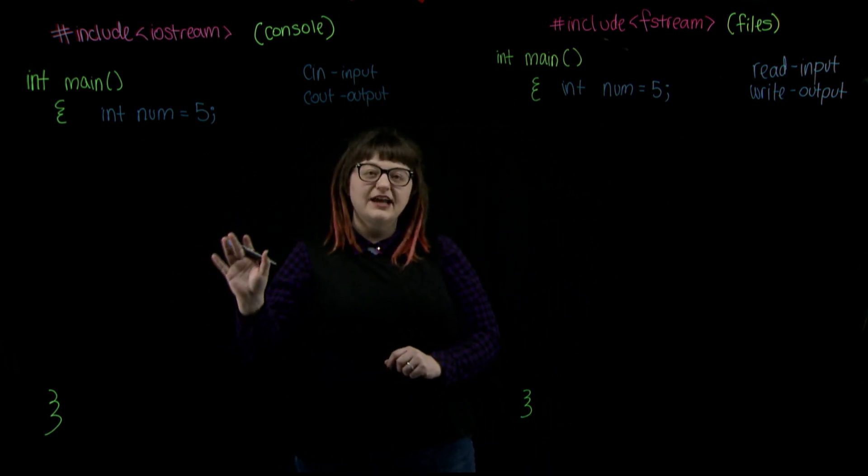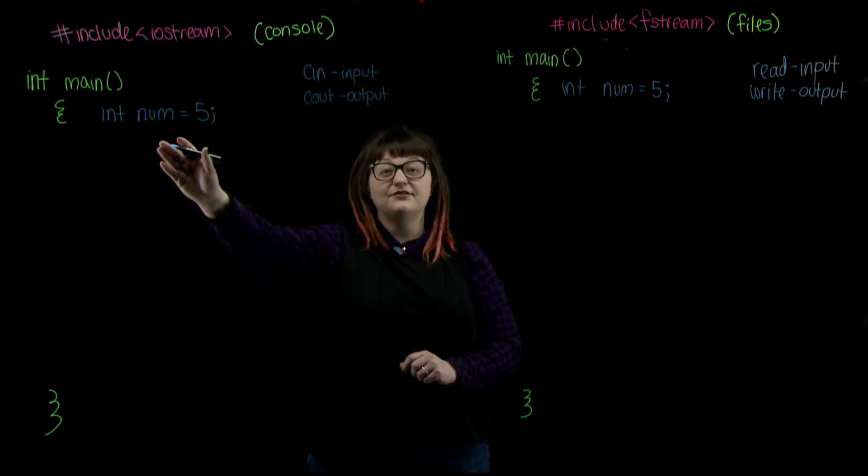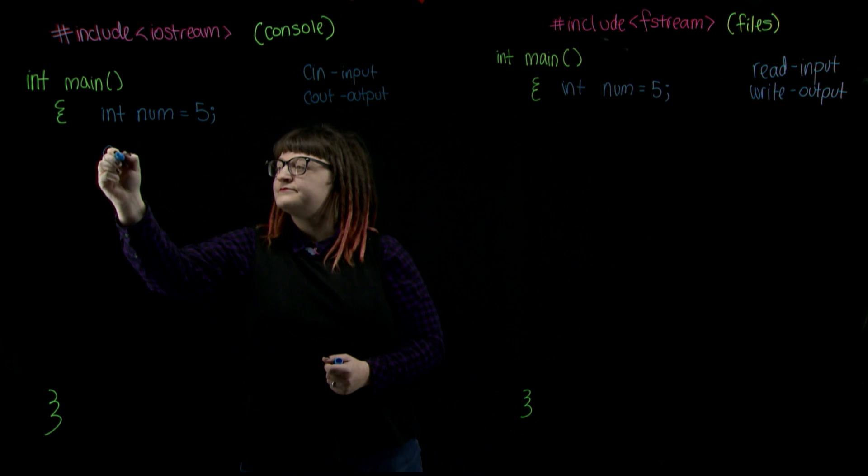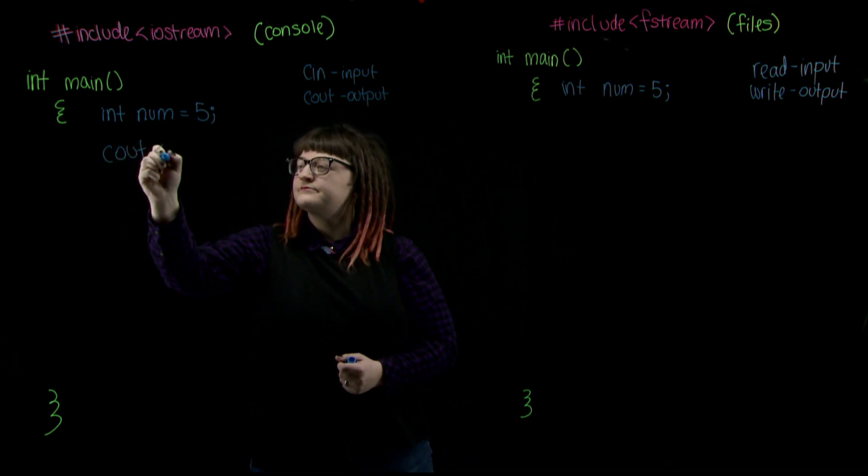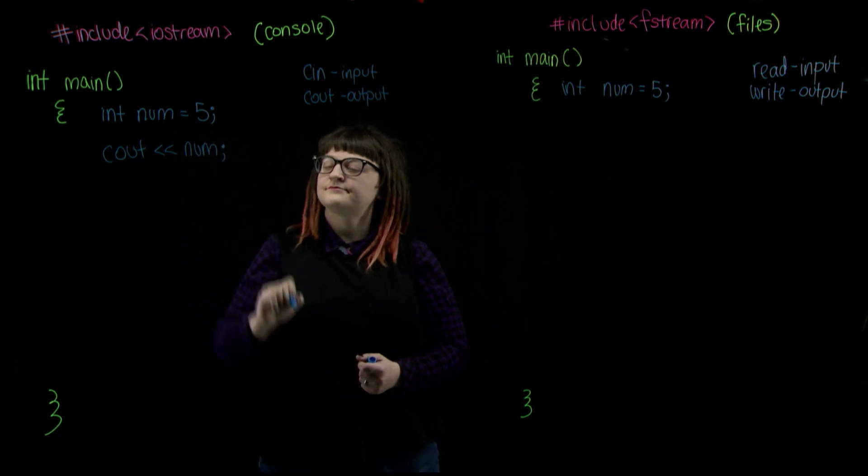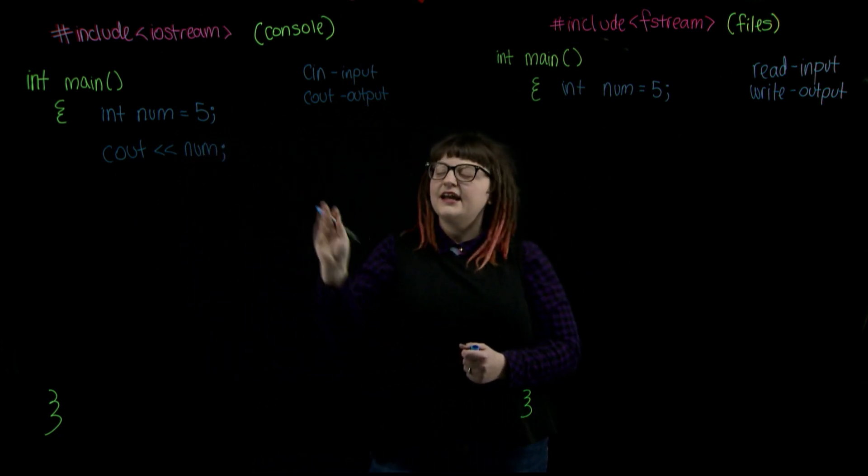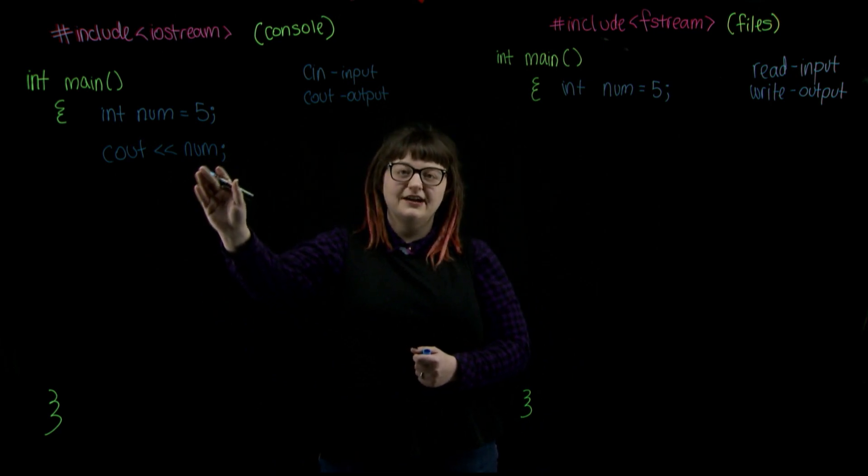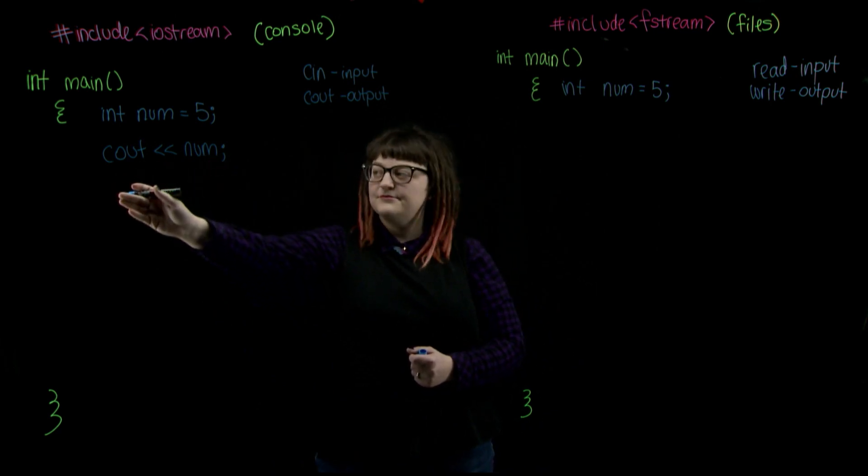With iostream, if you want to output a value, let's say the value of num, to the console, we would do it like this. And that works because it tells our compiler where to send our output for num, and in this case, to the console.